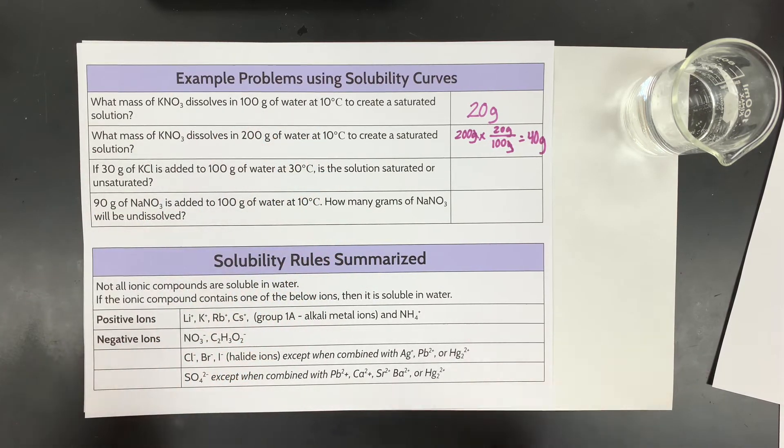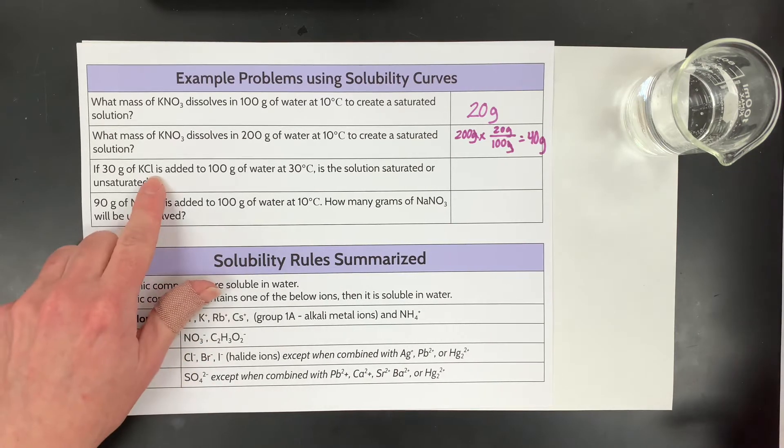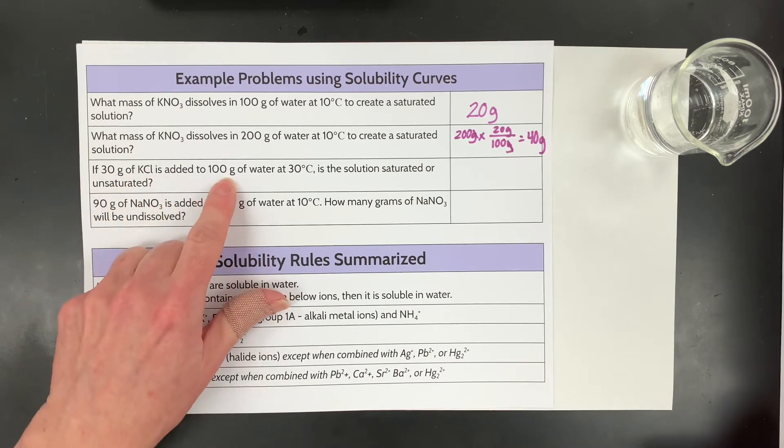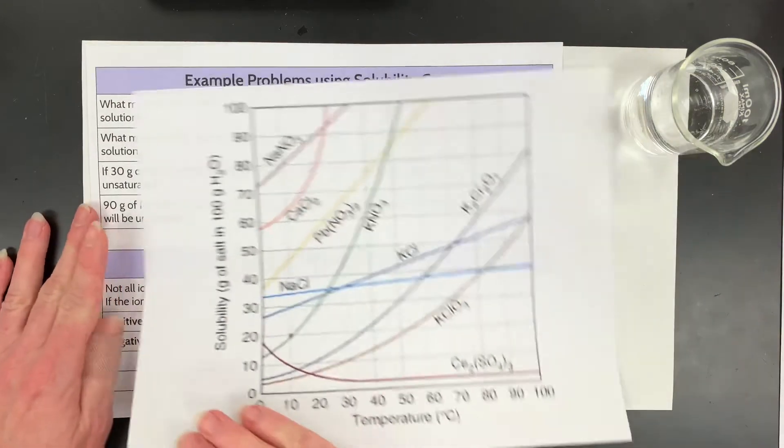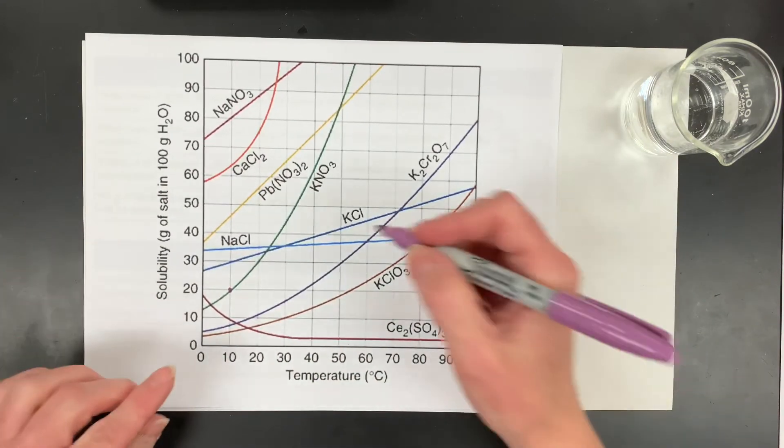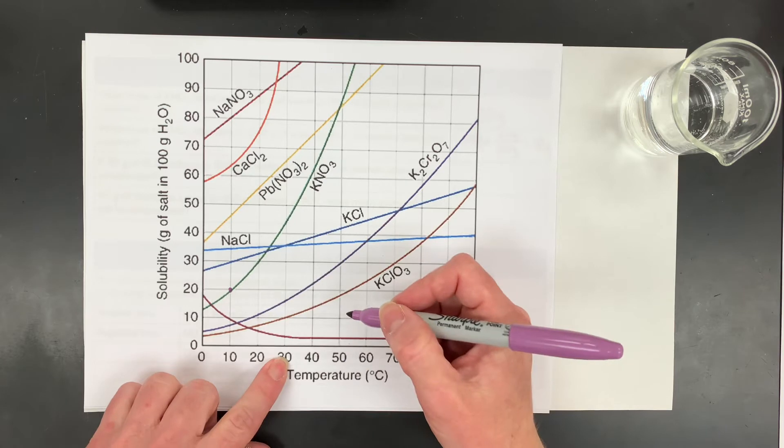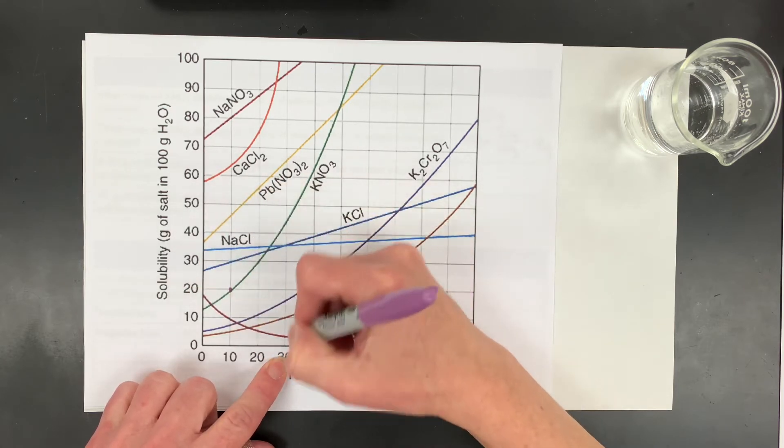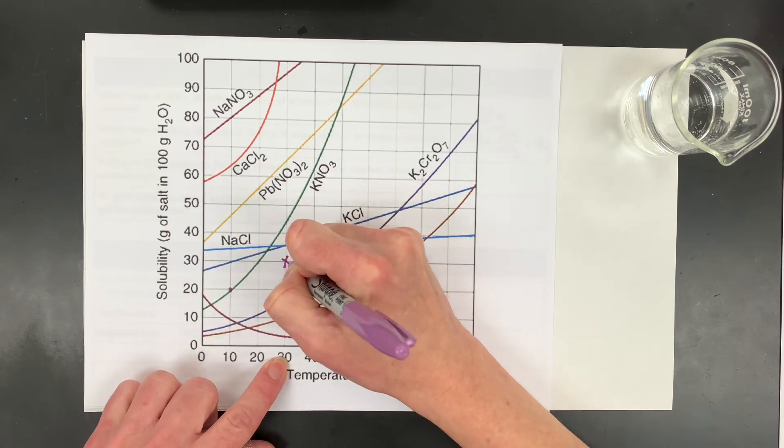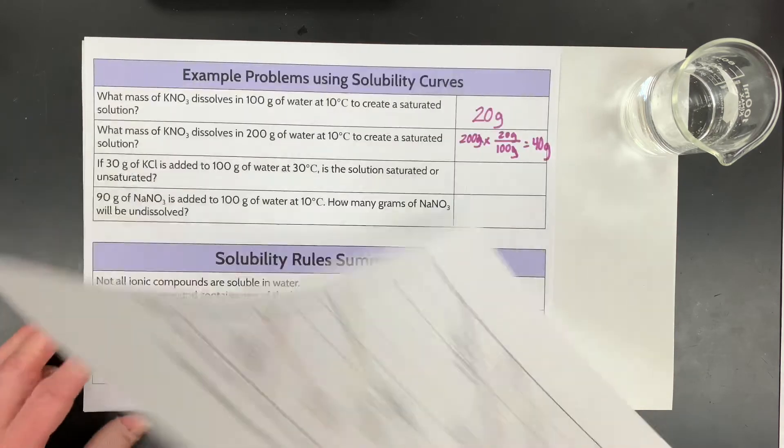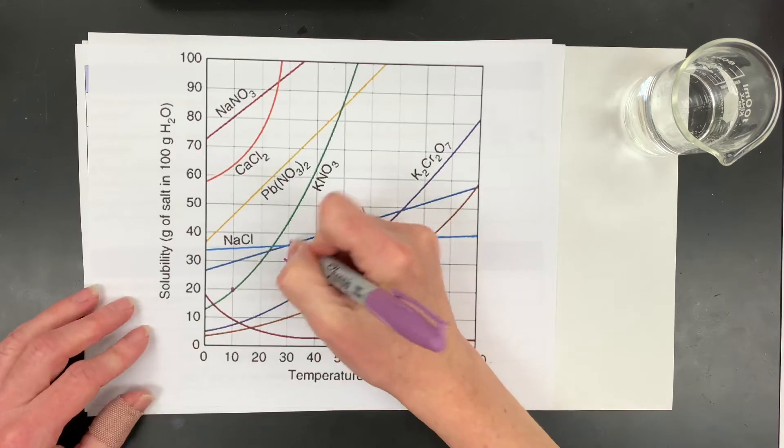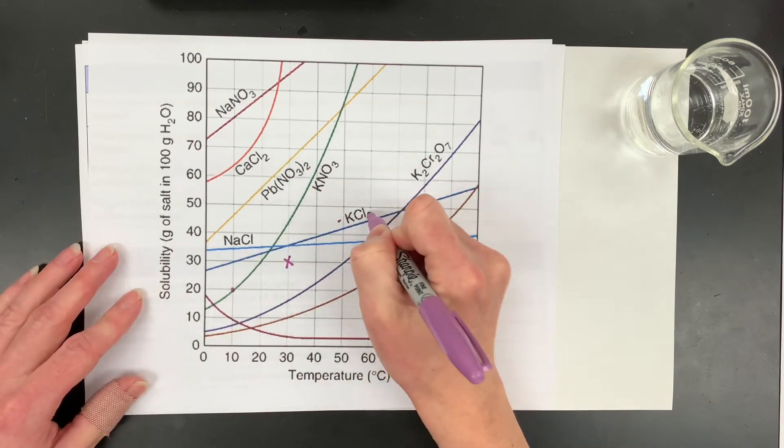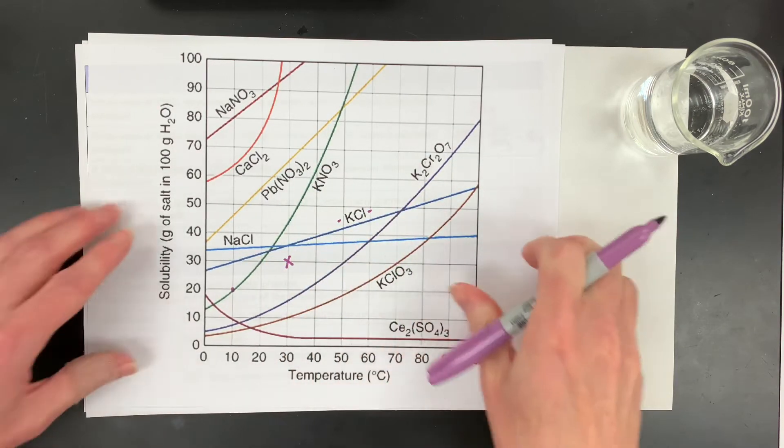All right, let's move on to a different one. KCl, so you have 30 grams in 100 grams, so it matches the axes, and we're at 30 degrees. Okay, so 30 grams, 30 degrees, I did that on purpose to make this easier. So 30 grams, 30 degrees, which is right here, and then we're looking at KCl this time. Let's look back. KCl, which is right here.